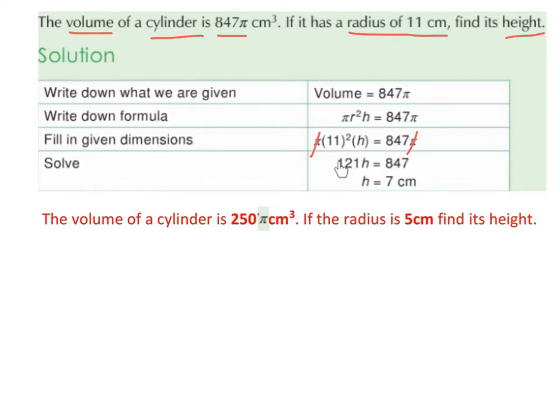So 11 squared is 121, so we have 121h equals 847. We want to solve for h, so 847 divided by 121 is going to be 7. So the height is equal to 7 cm.